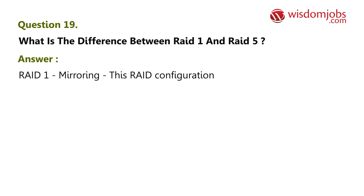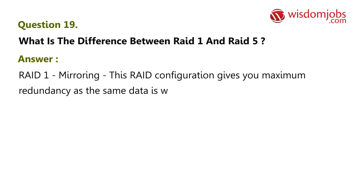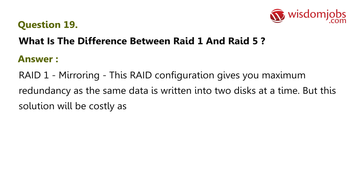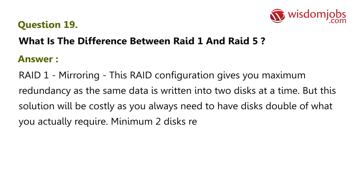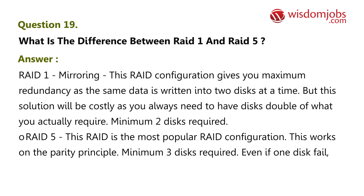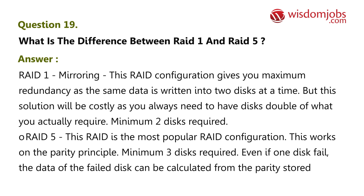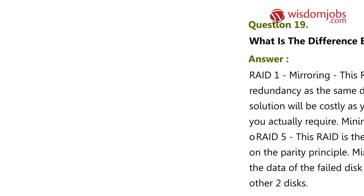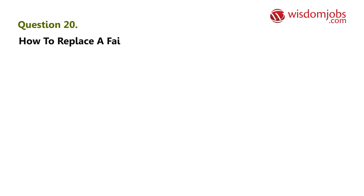Question 19: What is the difference between RAID 1 and RAID 5? Answer: RAID 1 — Mirroring. This configuration gives maximum redundancy as the same data is written to two discs at a time, but it is costly since you always need double the discs; minimum two discs required. RAID 5 — the most popular RAID configuration, working on the parity principle; minimum three discs required. Even if one disc fails, the data can be calculated from the parity stored in the other discs.